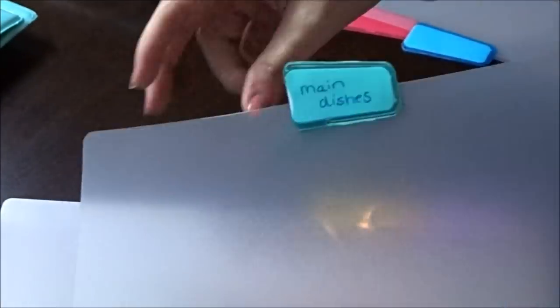The five categories I went with were appetizers, side dishes, main dishes, slow cooker, and desserts.